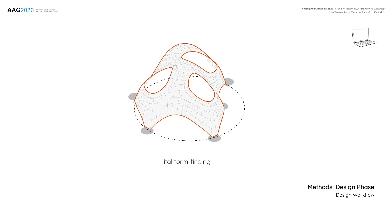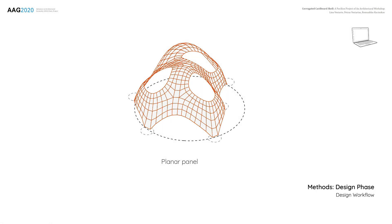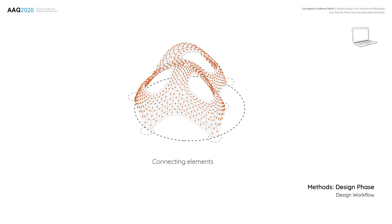The next step was directly related to the sheet material and laser cutter fabrication, so we had to use planar elements — for the panels we applied the projection method. And finally, the last step was the design of the diagonal elements connecting neighboring panels.